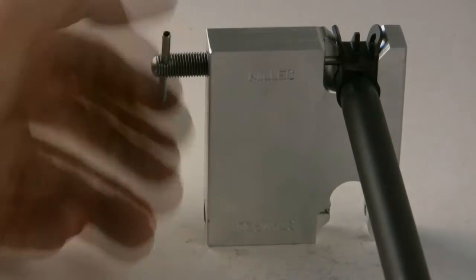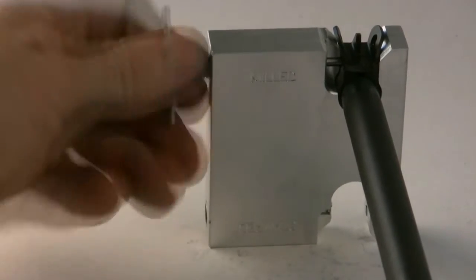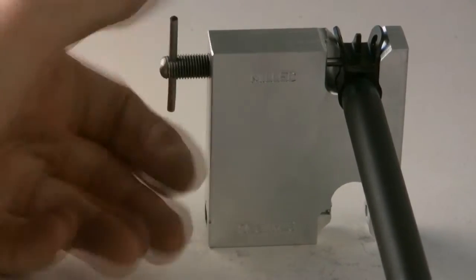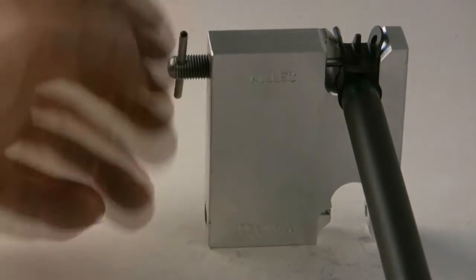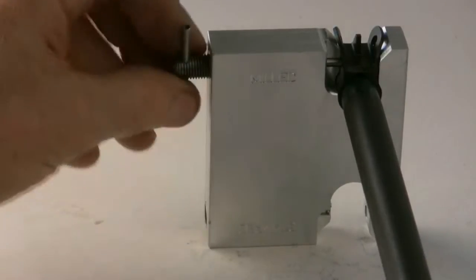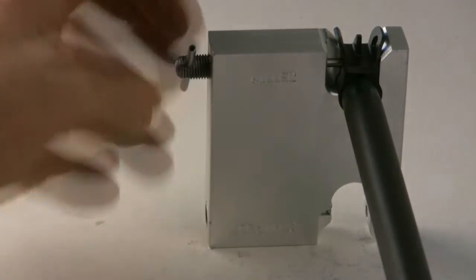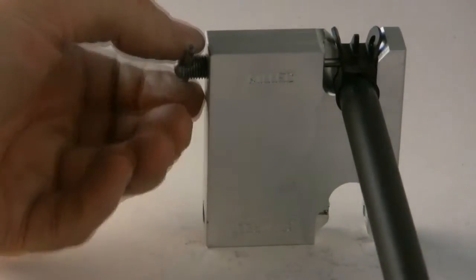That way the removal pin will travel inside the sight pin hole, pushing the sight pin out. You will soon see the sight pin protrude from the tool.